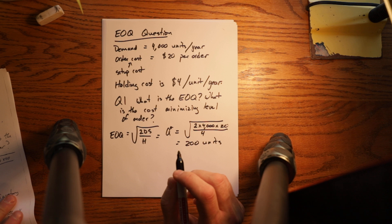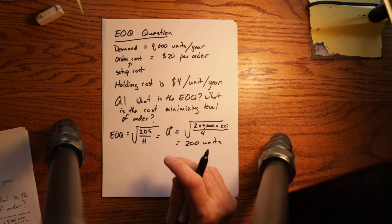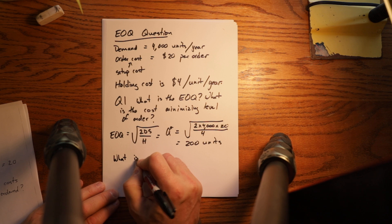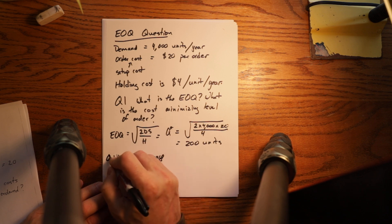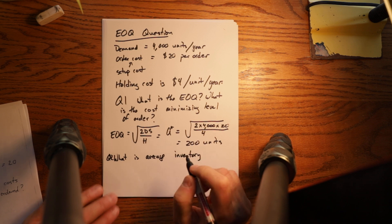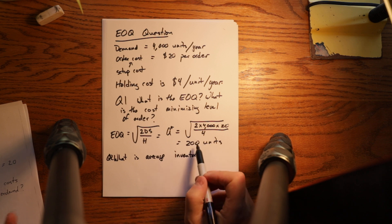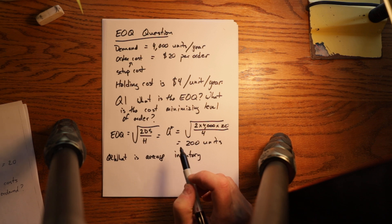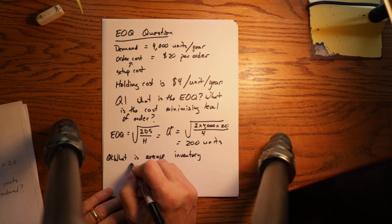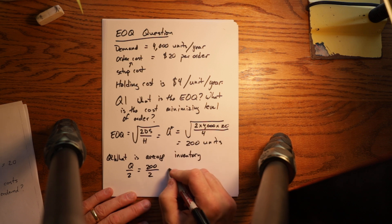Now let's take a look at a couple of other questions we could ask relative to EOQ. So what is your average inventory? In this case you order, you get 200 units in, your maximum inventory is 200, then you use them at a steady rate until you get down to zero. So average inventory is Q over 2, which equals 200 divided by 2, equals 100.